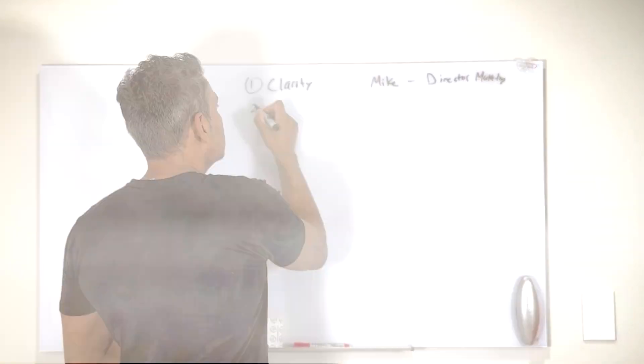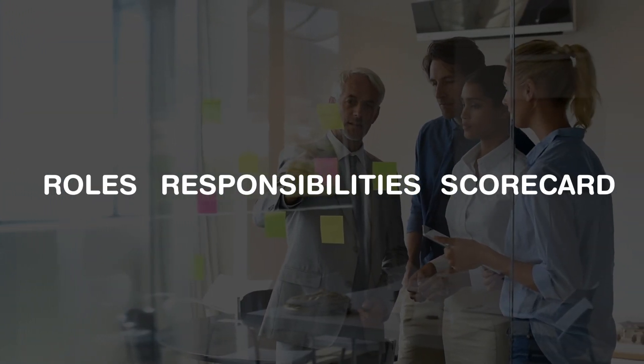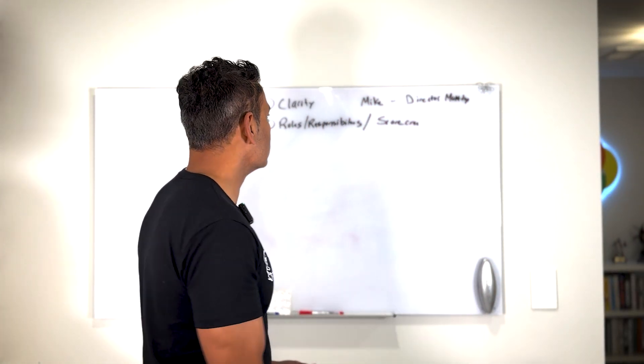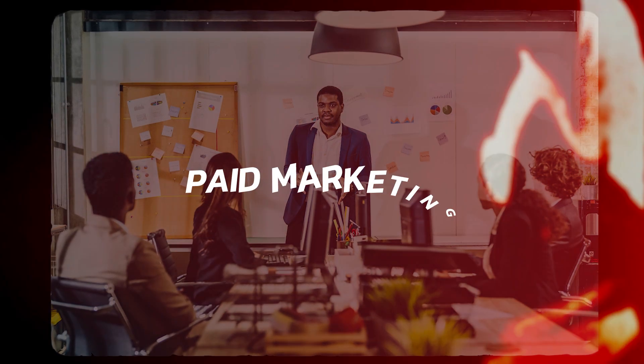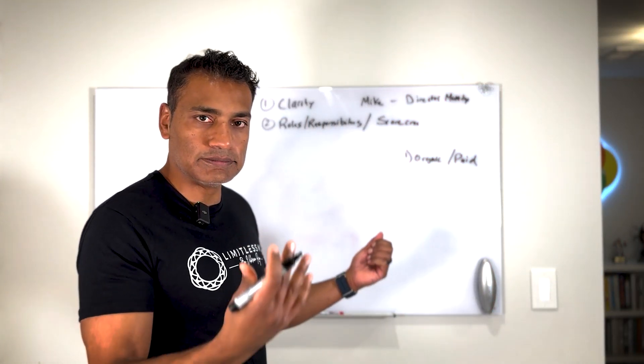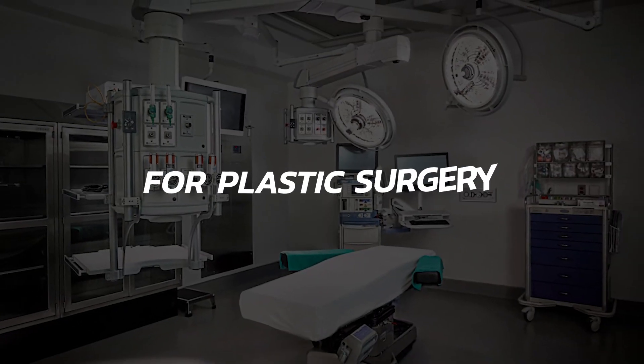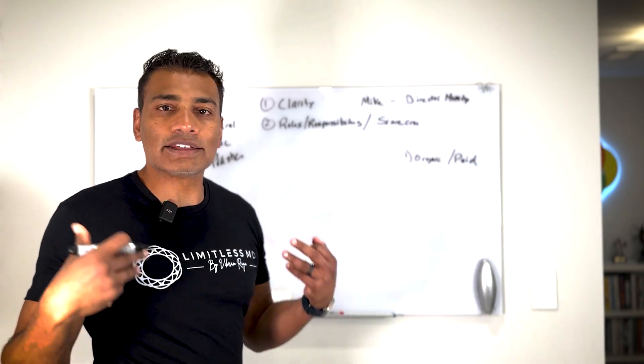So knowing Mike is going to be a director of marketing, then I want to know what are the roles, the responsibilities, and his scorecard. For this particular example, director of marketing, the role is to be in charge of all organic and paid marketing for the company. Let's just call it a medical clinic. It's a medical clinic for plastic surgery and what they're doing is bringing in leads for people to do aesthetic procedures.